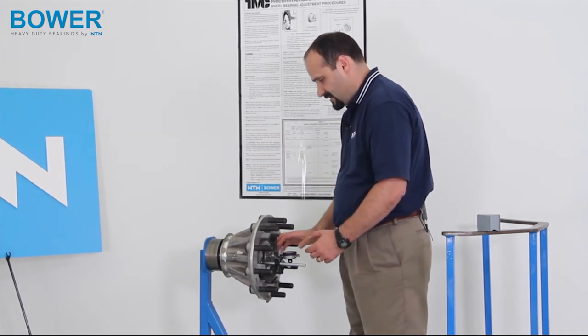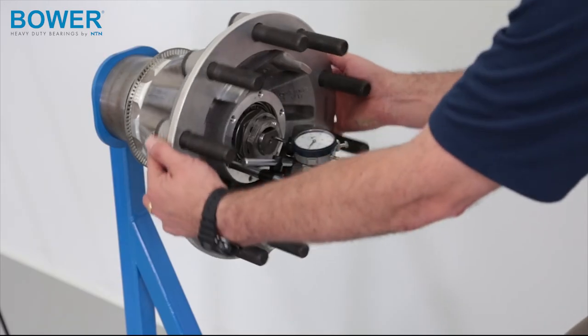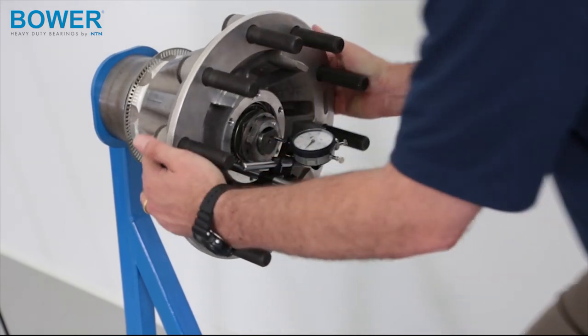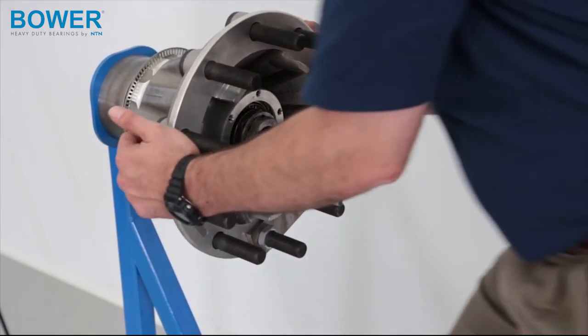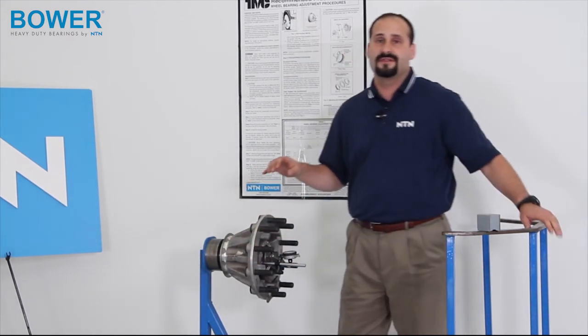I'll try to set it off to zero, and then what we do is, while turning and pulling, we'll pull and push, and here I'm getting about 12 to 13 thousandth worth of end play.